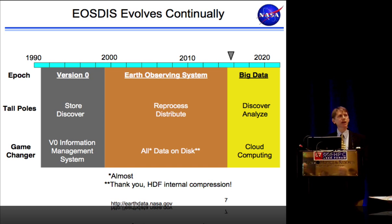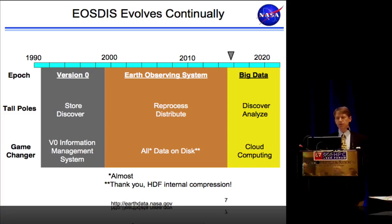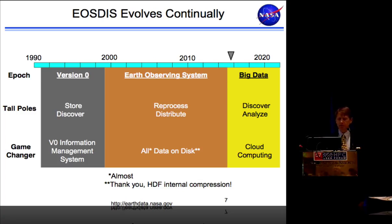In the past several years up until the big data era, Moore's Law had begun to solve the reprocessing problem, and we'd solved the distribution problem as well. Now we're coming into the big data era, where we think the tall poles are going to go back to the discovery process and — more importantly — the ability to analyze this much data, particularly as our user community grows alongside the growing data volume. The game changer is probably going to be cloud computing.